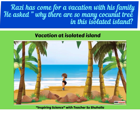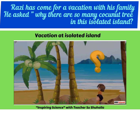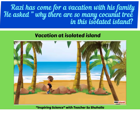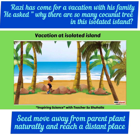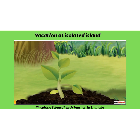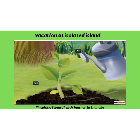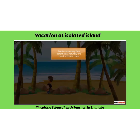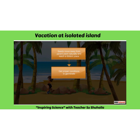A kid, Razzie, has come for a vacation with his family. He asks: why are there so many coconut trees on this isolated island? Seeds move away from the parent plant naturally and reach a distant place. Seeds need suitable conditions of soil, air, water and sunlight, and then grow into a new plant.